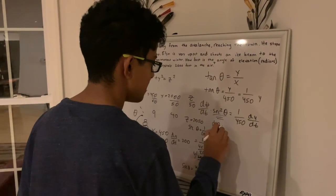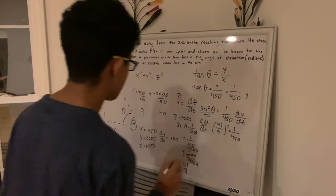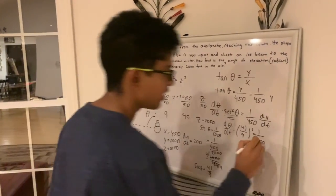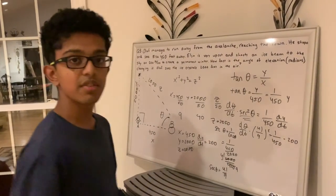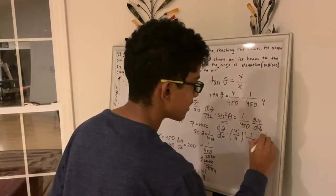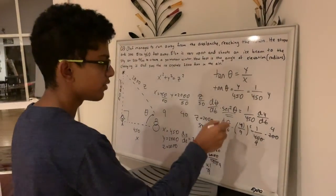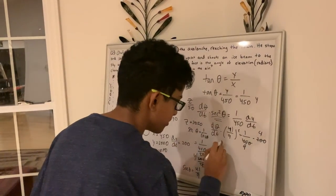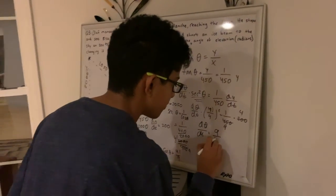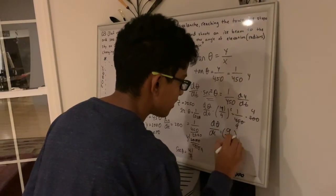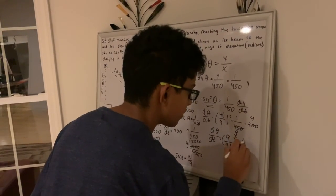So d theta dt times 41 over 9 squared equals 1 over 450 and we know dy dt is 200. So 200. So now what we can do here, we can simplify, divide by 50. So we get a 9 here, you get a 4 here, and we bring this 41 over 9 squared to the other side. So it will be the reciprocal. So d theta dt equals 9 over 41 squared times 4 over 9.